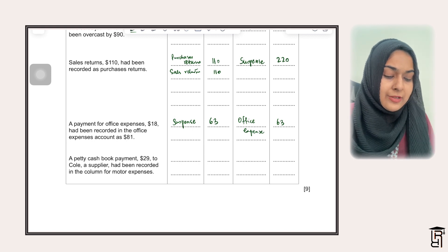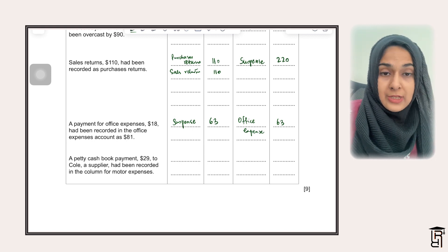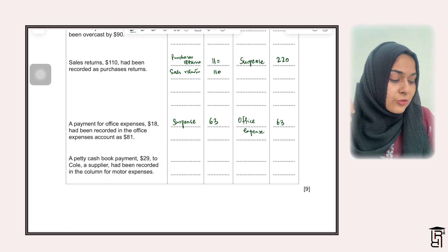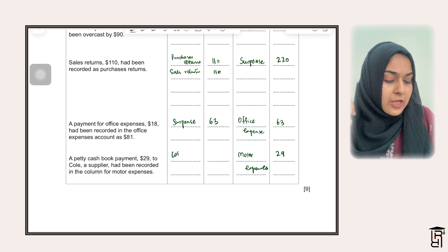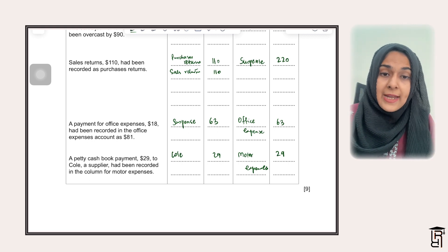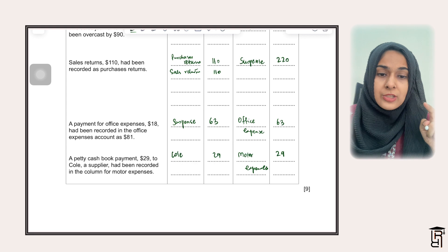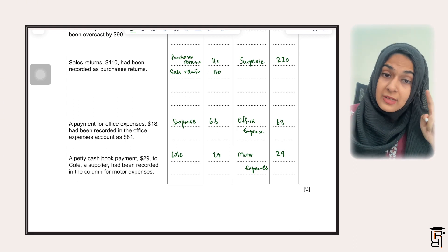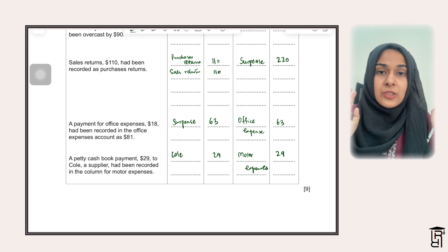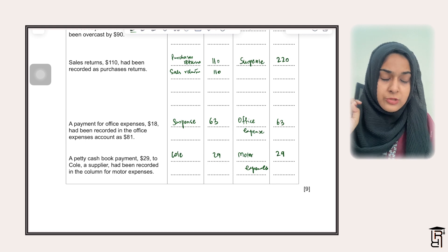The next error: a petty cash book payment of £29 to a coal credit supplier had been recorded in the column for motor expenses. That means you have wrongly recorded it in the motor expenses account, so you remove it from motor expenses by crediting motor expenses £29. The correct double entry should be debit coal (creditor) and credit petty cash. The error made was debit motor expenses, credit petty cash. So you remove it from motor expenses and debit the coal account.